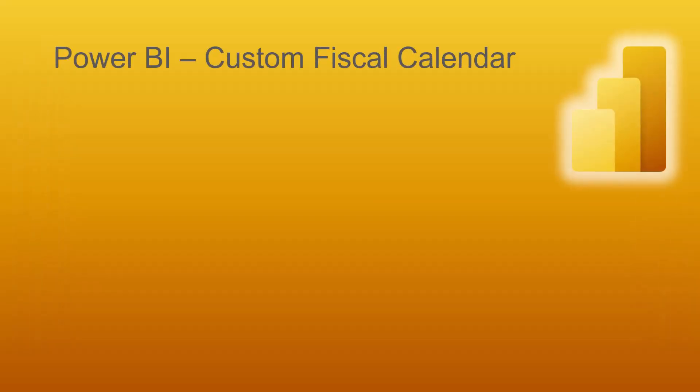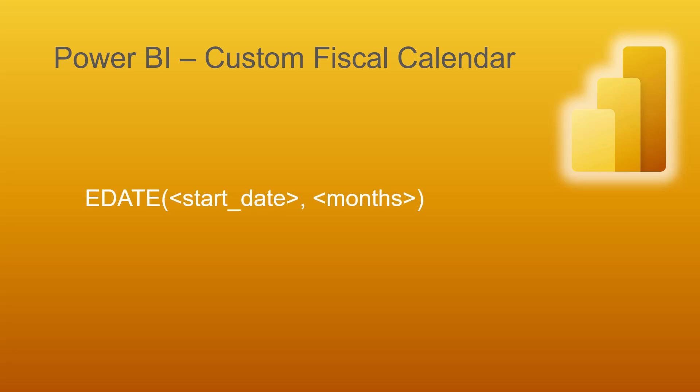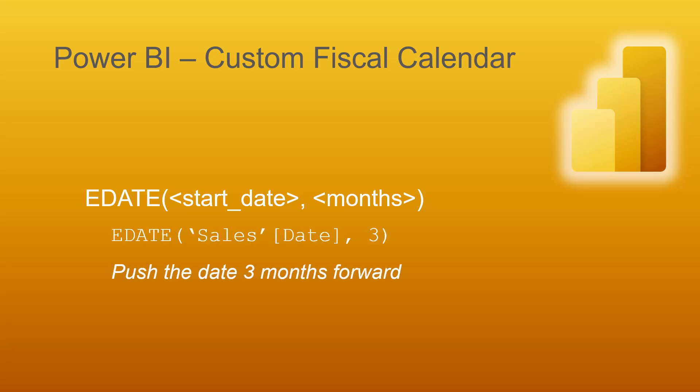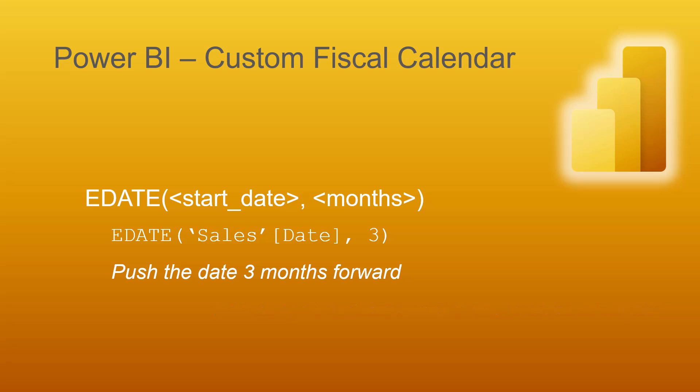For our custom fiscal calendar in Power BI, much of what we're going to build will be possible through use of the EDATE function. EDATE is an incredibly simple function — you feed it a date and then tell it a number of months to go into the future. For example, if I gave it a date column from a sales table and told it three, it would push whatever date three months into the future.